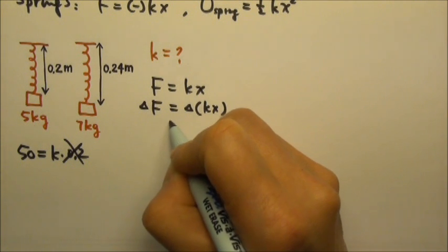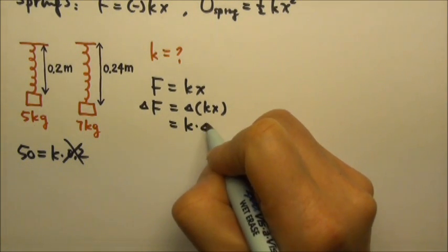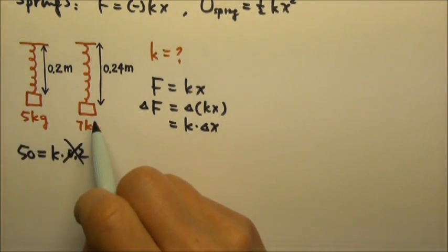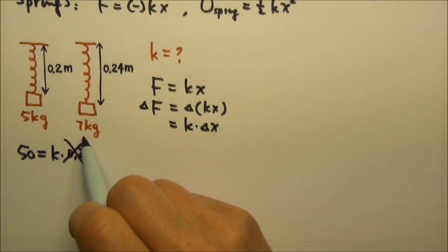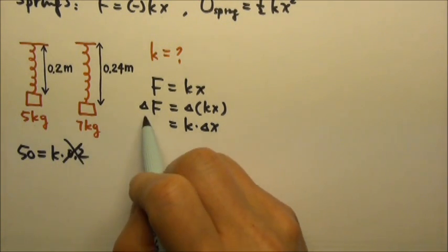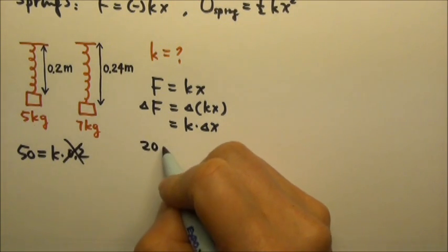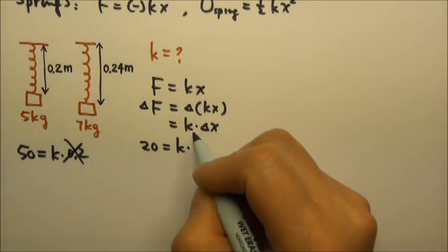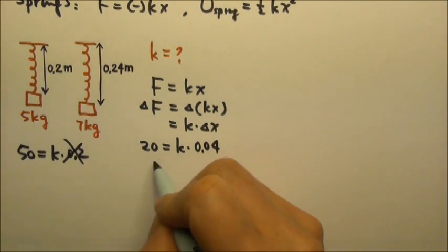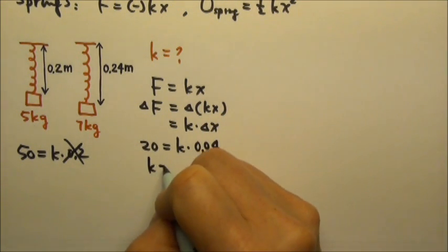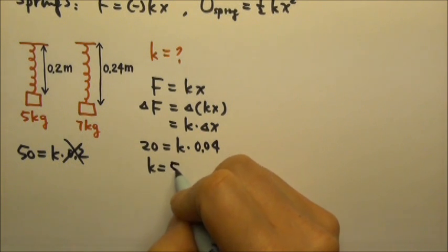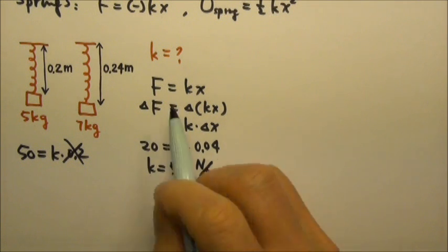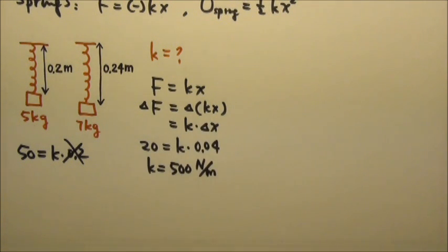Because this is a linear equation, we can look at the differences: ΔF = k·Δx. Adding 2 extra kilograms adds 20 extra newtons of force and stretches the spring an extra 0.04 m. So k = 20 N ÷ 0.04 m = 500 N/m. The unit for the force constant is newtons per meter, since it is force divided by the stretched amount.